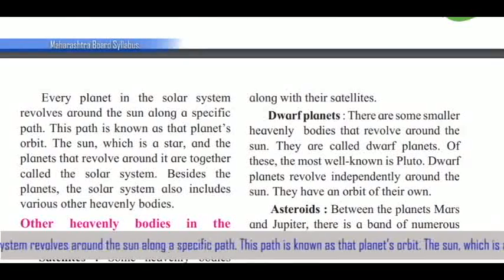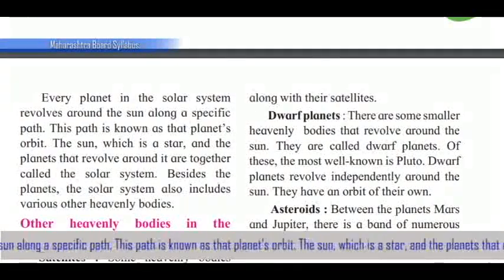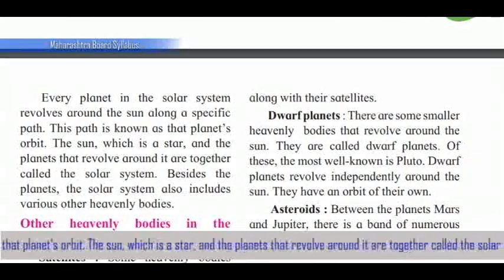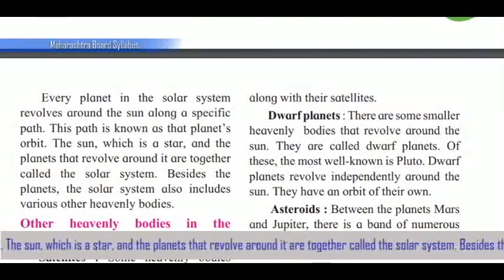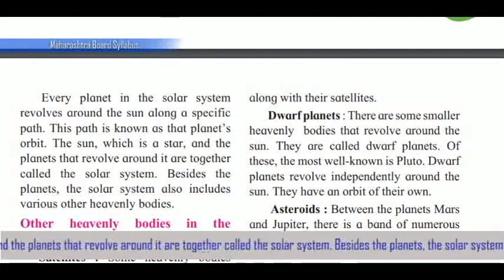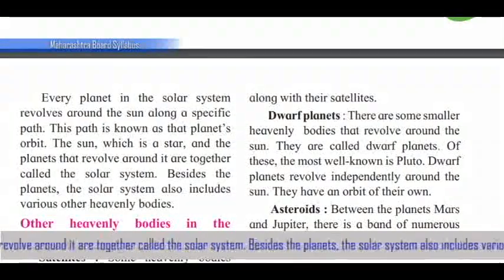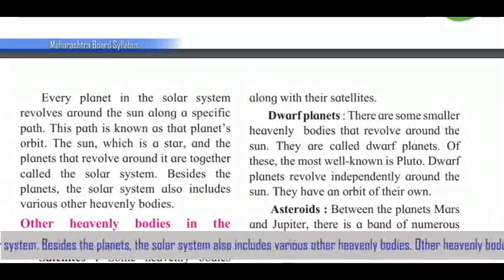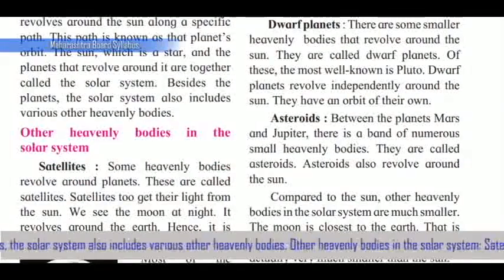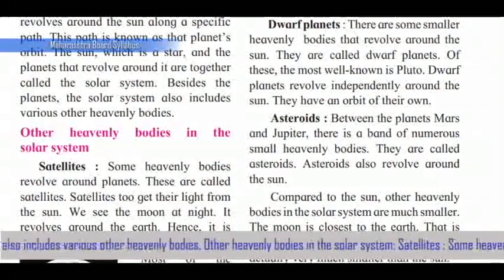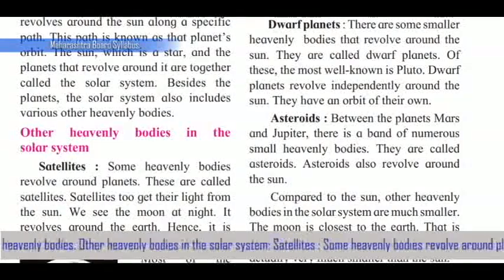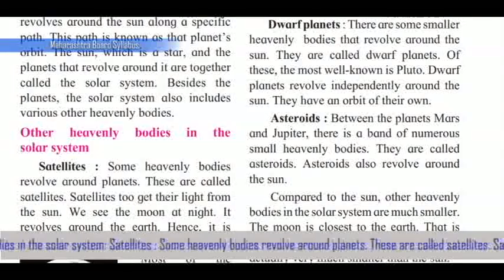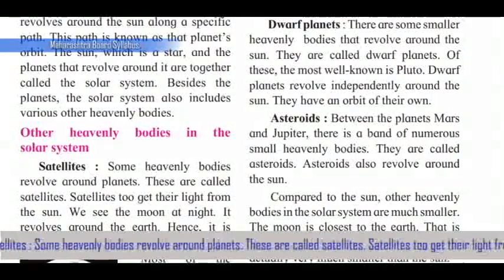Every planet in the solar system revolves around the Sun along a specific path. This path is known as that planet's orbit. The Sun, which is a star, and the planets that revolve around it are together called the solar system. The solar system also includes various other heavenly bodies.